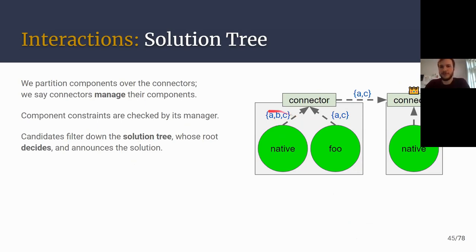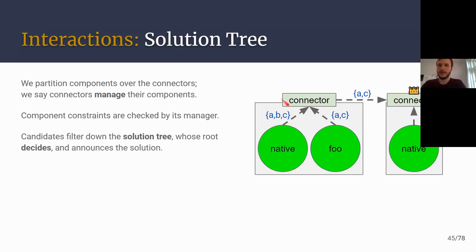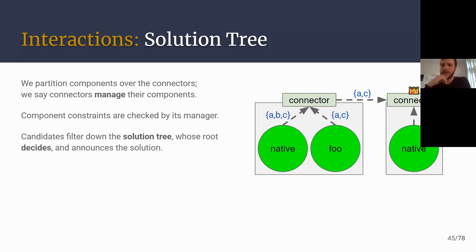Information travels from the leaves — these components — toward some connector that is the root of the tree, which I call the leader. Per component, we enumerate the set of candidate solutions and pass up the tree the ones that this component accepts. Internal nodes have a global view of the subtree they are root of. What emerges is a filtering of solutions from the leaves all the way down to the root. The connector that is the leader can reason about which candidates all session components have accepted and perform the decision. With a single leader we know there will be consensus — only one decision will occur and it can be broadcast so everybody observes the same solution.